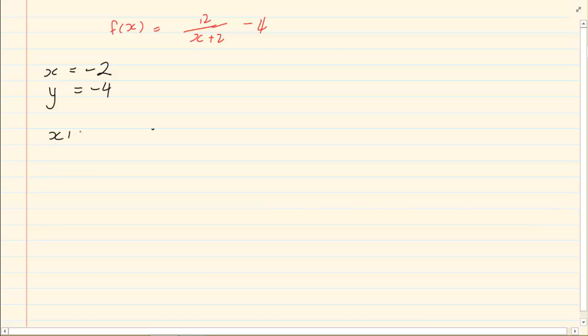Then we have our X intercept which is Y is equal to 0. So we have 0 is equal to 12 over X plus 2 minus 4. Take my 4 over. We have 4 is equal to 12 over X plus 2. Solving for X.